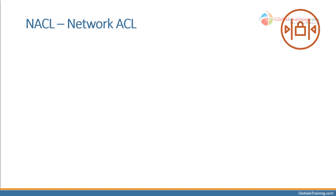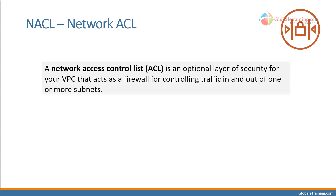NACL — Network Access Control List. This is an optional security layer that you can apply at the subnet level. Before a packet gets into your EC2 instance, it has to get into the subnet after routing the packet into the subnet. At the subnet level, you control the traffic using NACL.